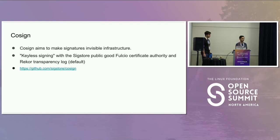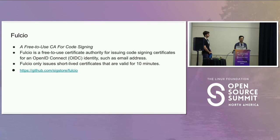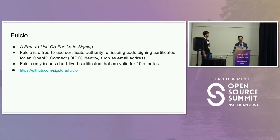The first tool is Cosign. Cosign makes signatures invisible infrastructure. One critical thing is that the Scorecard GitHub action uses keyless signing, which is a phenomenal feature. It uses Fulcio and Rekor. Fulcio — the acronym is a free-to-use CA for code signing. It issues code signing certs using OIDC as a standard protocol. Fulcio also provides short-lived certificates that are valid only for 10 minutes, which Spencer will demonstrate specifically.